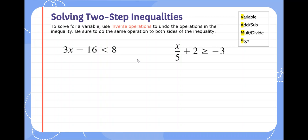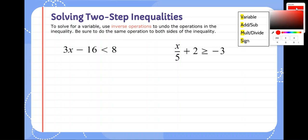Today we're going to solve two-step inequalities by using inverse operations to undo the operations on both sides of the inequality and isolate the variable. We do this the same way we would an equation.